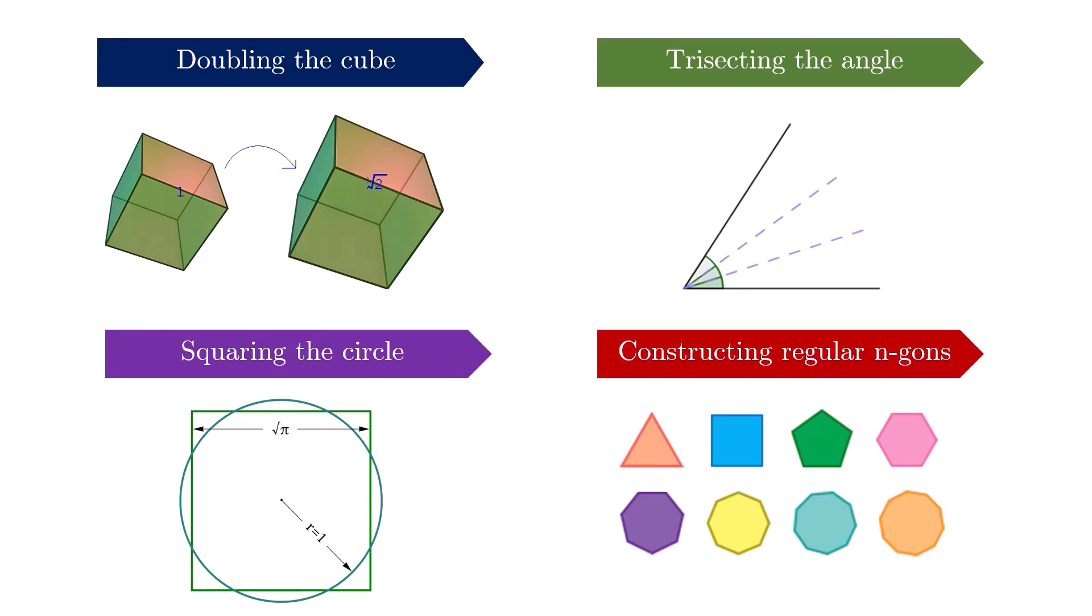The study of constructible numbers is elegantly linked to four famous problems in Euclidean geometry. First, doubling the cube. Second, trisecting the angle. Third, squaring the circle. And fourth, constructing regular polygons. We will give the more detailed problem statements when looking at these problems later on in the video.